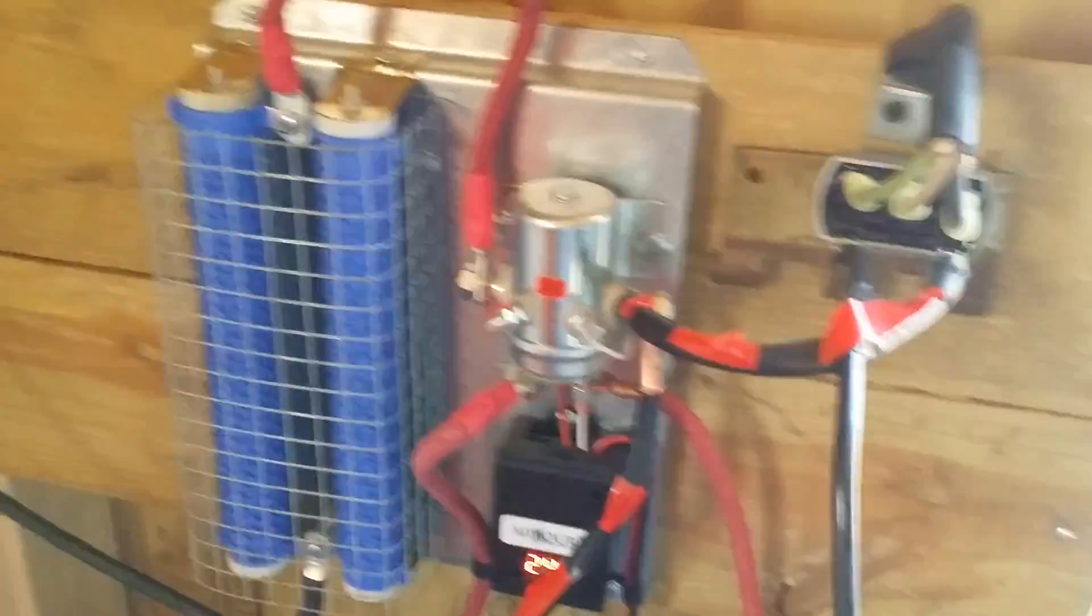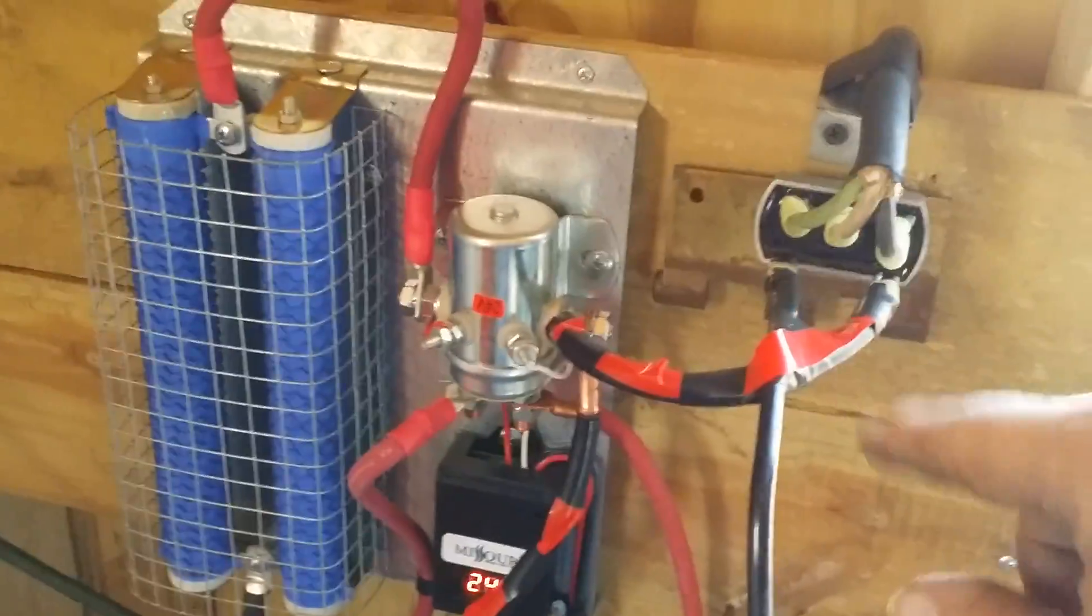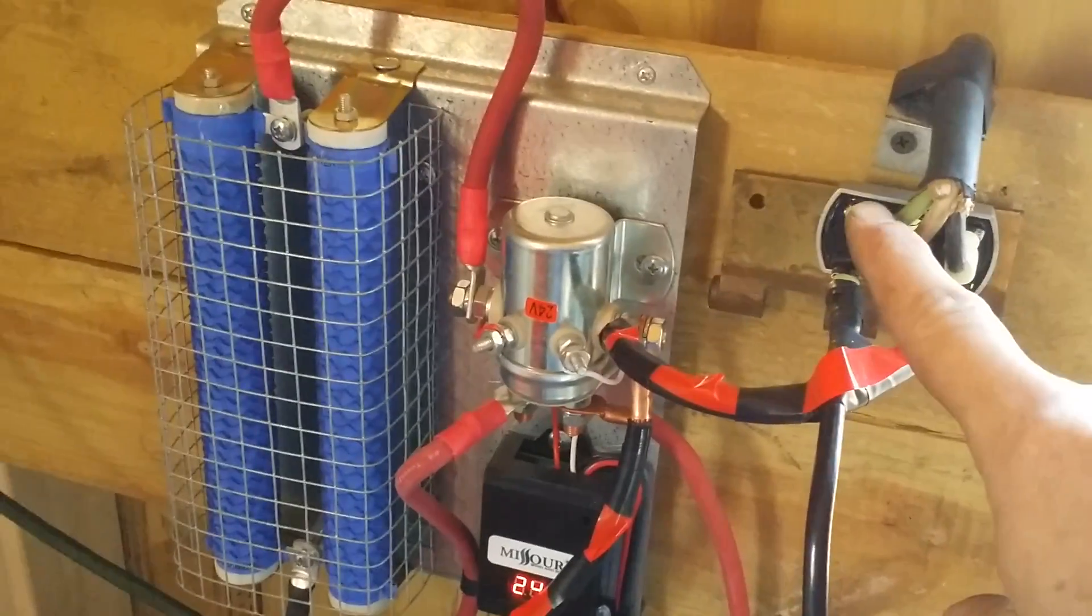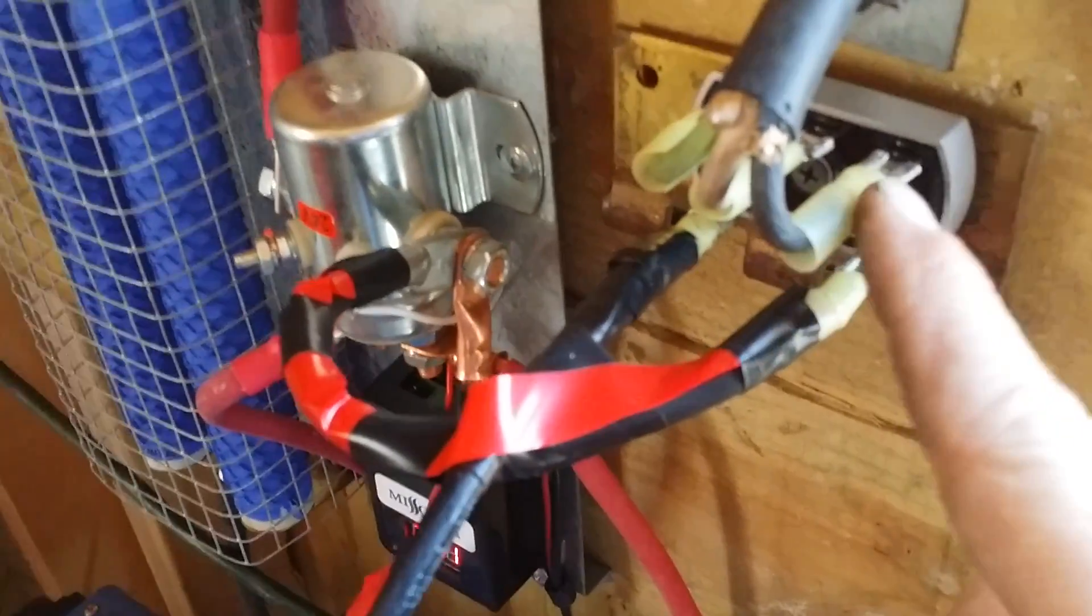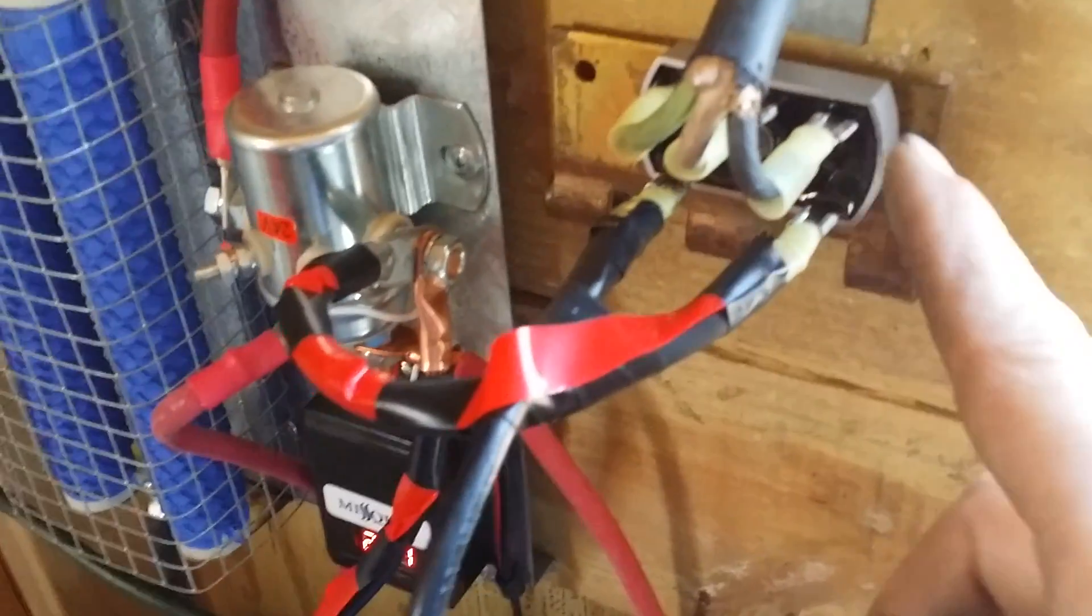Another Mickey Mouse deal is here's the rectifier for the wind. Wild AC comes out of these three and goes to here. But as you can see, these connectors are wrong. They were too small, they're a quarter inch. I really need like five sixteenths and much more heavy duty, but I had to use what I got.